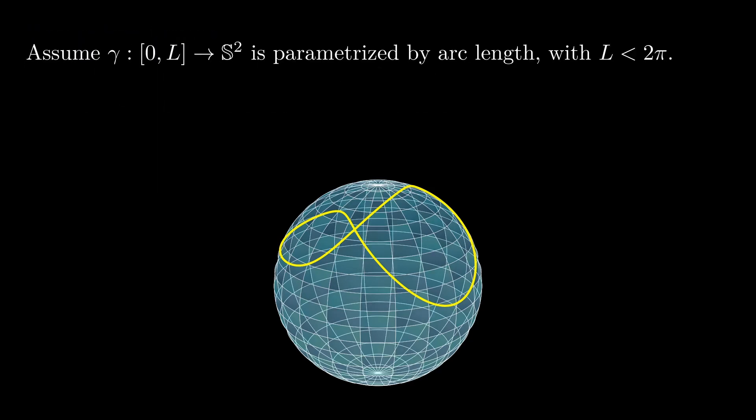We begin assuming that gamma is parametrized by arc length and its domain is an interval of length L which is less than 2π. Let p be gamma of 0 and q be gamma of L over 2. They separate the curve in two pieces, gamma 0 and gamma 1.